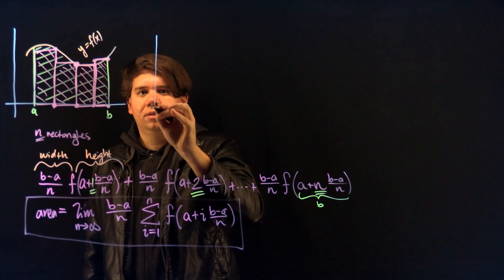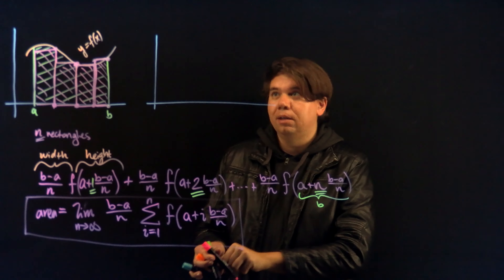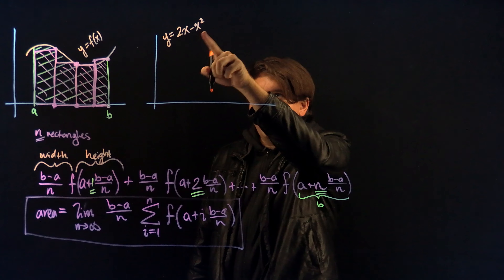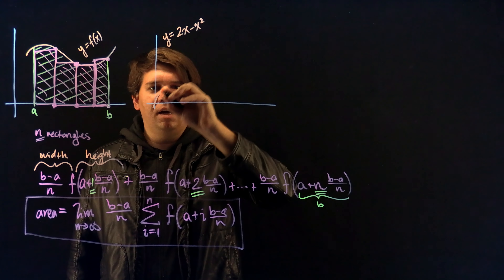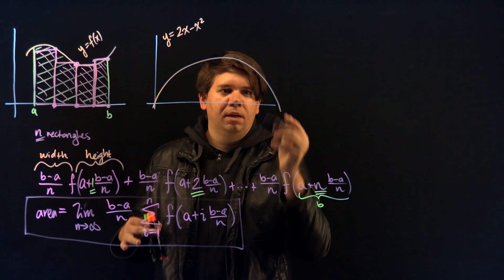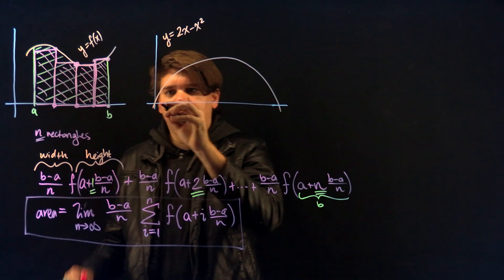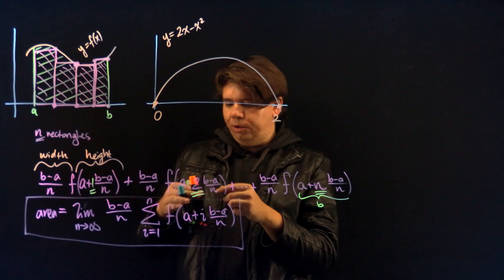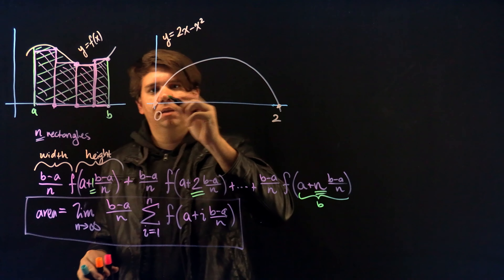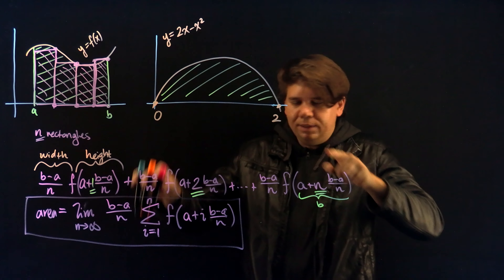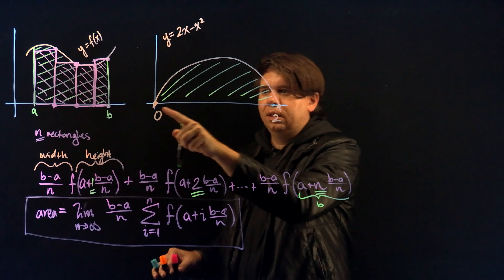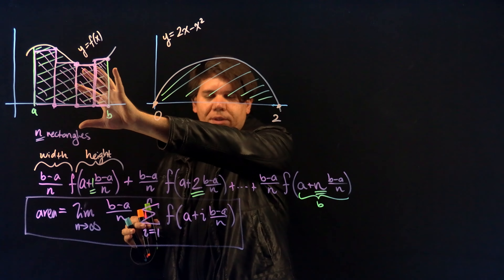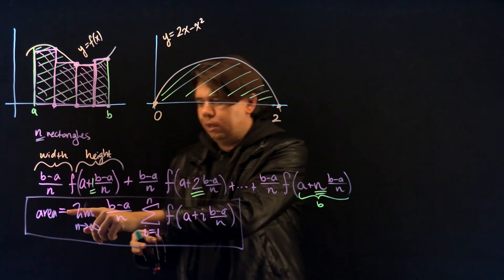Let's do a concrete example. We'll use y equals 2x minus x squared. The negative in front of x squared tells us it's an upside-down parabola. It crosses the x-axis at zero and at two. I want to know the area under this graph from zero to two — the area between the graph and the x-axis from zero to two. I'm not going to draw rectangles this time; I'll just use the formula.